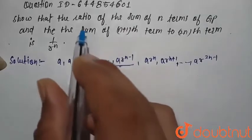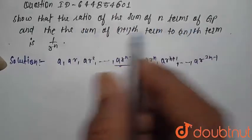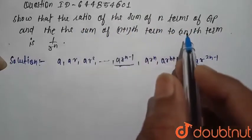So there is given the ratio of sum of n terms to the sum of n plus 1 to 2n term.